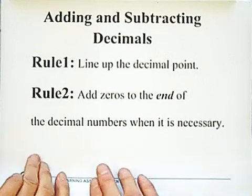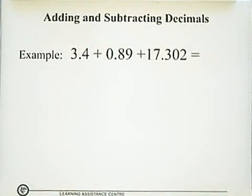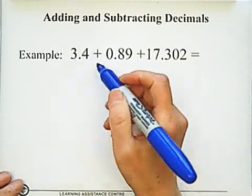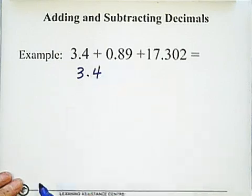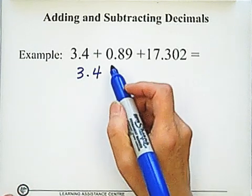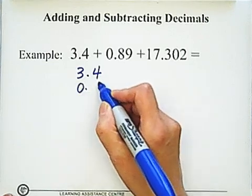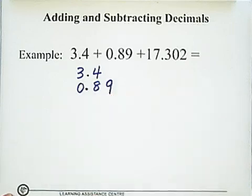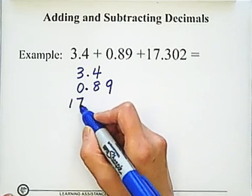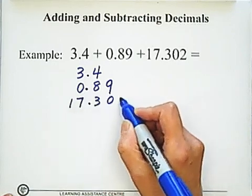Let's look at some examples. 3.4 plus 0.89 plus 17.302. First, we follow the first rule: line up the decimal. So 3.4, plus 0.89 - because rule 1 says line up the decimal, we need to put 0.89 so that the decimals line up. Then 17.302.